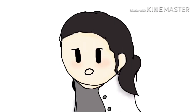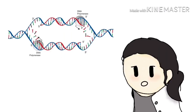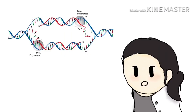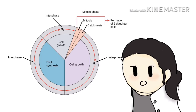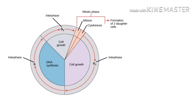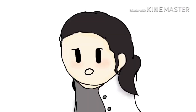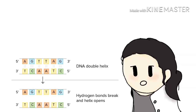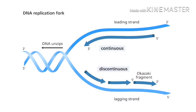DNA replication. Replication follows several steps that involve multiple proteins called replication enzymes and RNA. In eukaryotic cells, such as animal cells and plant cells, DNA replication occurs in the S phase of interphase. During the cell cycle, the process of DNA replication is vital for cell growth, repair, and reproduction of organisms. Initiation. Replication begins at the location of the double helix, known as the origin, to which certain initiator proteins bind and trigger unwinding.